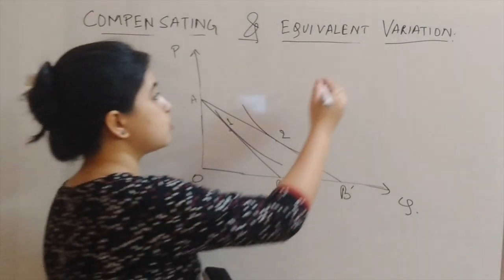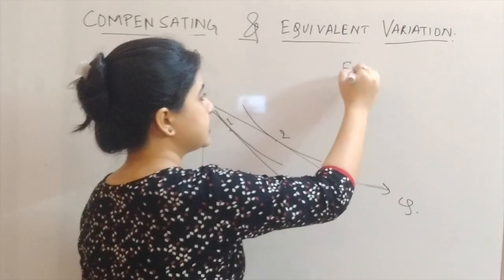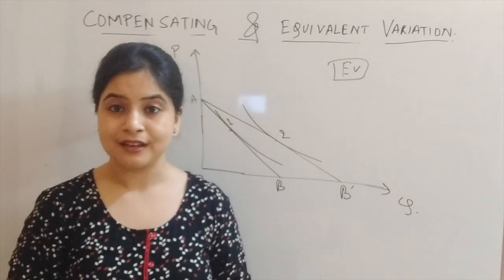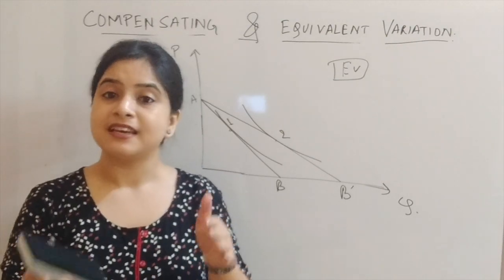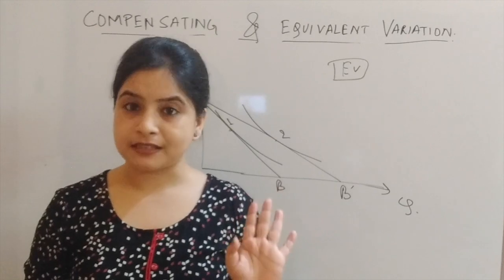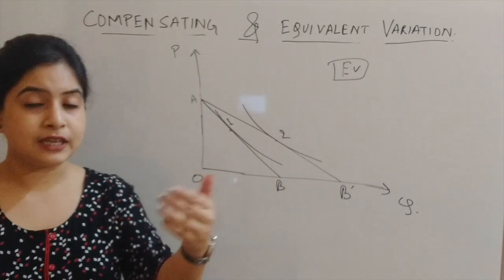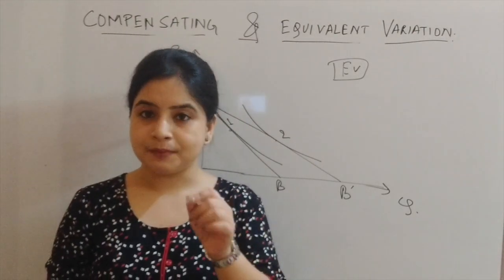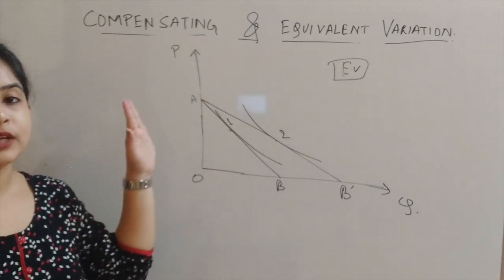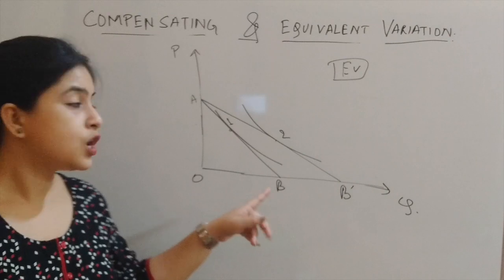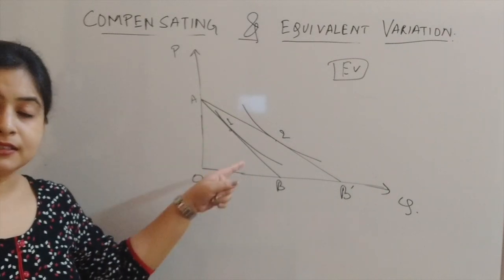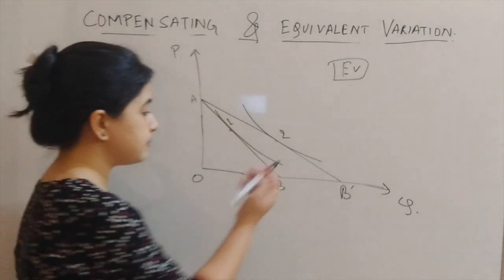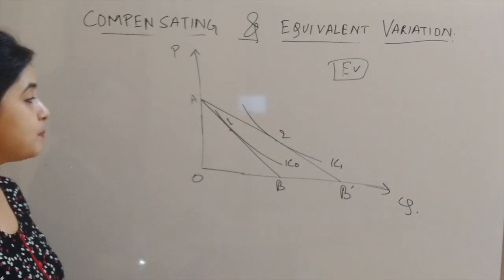Now moving to the equivalent variation portion. The basic pattern remains the same: AB is the initial budget line and AB dash is the final budget line after the fall in the price of good X1. Equivalent variation takes place in the initial scenario when there is no change in prices. To capture EV, we need to draw a line parallel to the initial budget line AB, and the new budget line we draw must pass through the final IC, that is IC1. I am marking IC naught and IC1 accordingly.